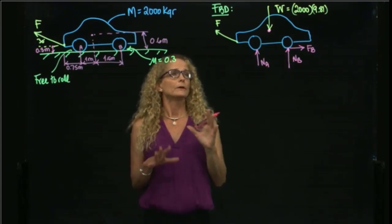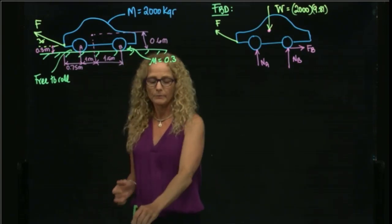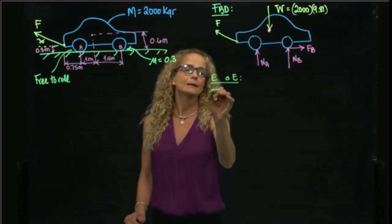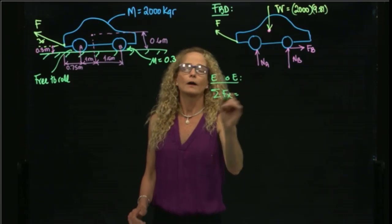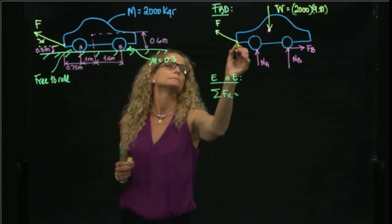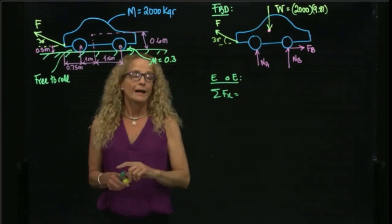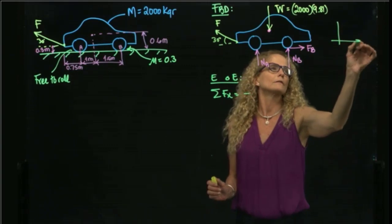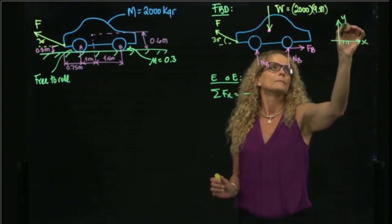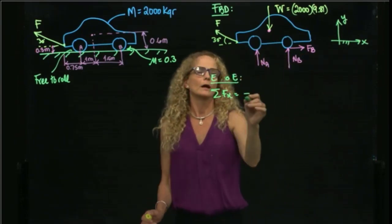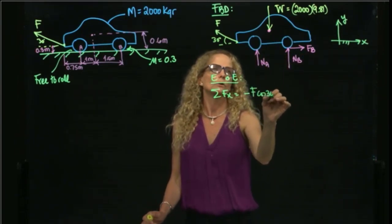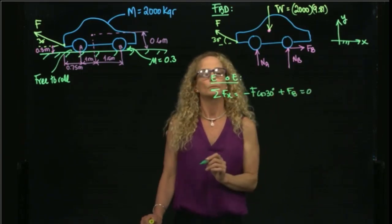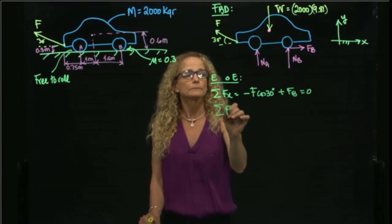Now that we have our free body diagram, we apply our equations of equilibrium. We add forces in X — for that we need the angle, which we have. Using a coordinate system where X positive goes to the right, we get: negative F cosine 30 plus the friction force equals zero.